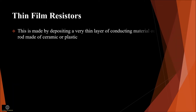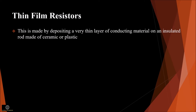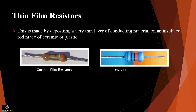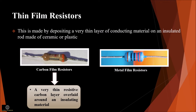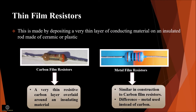Thin film resistors are made by depositing a very thin layer of conducting material on an insulated rod made of ceramic or plastic. Two types of thin film resistors are carbon film resistors and metal film resistors. In carbon film resistors, a very thin resistive carbon layer is covered around an insulated core made of high-grade ceramic material. The metal film resistor is similar in construction to carbon film resistors, but the main difference is that metal is used instead of carbon. Metal film resistors are very tiny, cheap, and reliable in operation.